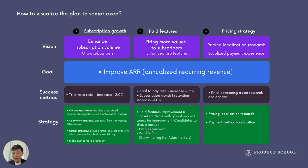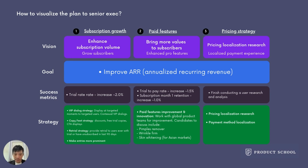To make your sub products successful, it is really important to get buy-ins from your senior management team. I would suggest visualizing your strategy as much as possible and being super clear about directions, goals, and success metrics, to help the senior management team assess whether it's worth investing resources.